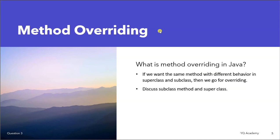Number 3: What is method overriding in Java? If we have methods with the same name, same signature, and same return type in a superclass and subclass, then we say the subclass method overrides the superclass method.